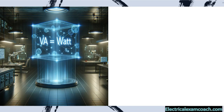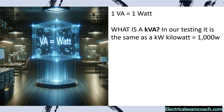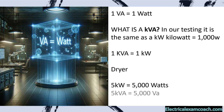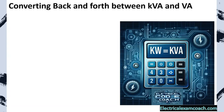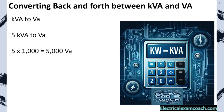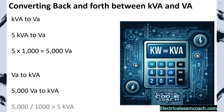Now that we're dealing with larger wattage appliances, let's clarify: 1 VA is equivalent to 1 watt. A KVA is the same as a KW — a kilowatt — which equals 1,000 watts. So 1 KVA is 1 KW for all of our testing. If a dryer is 5 KW, it's also 5,000 watts; if it's 5 KVA, it's 5,000 VAs. To go from KVA to VA, multiply by 1,000; to go from VA to KVA, divide by 1,000.